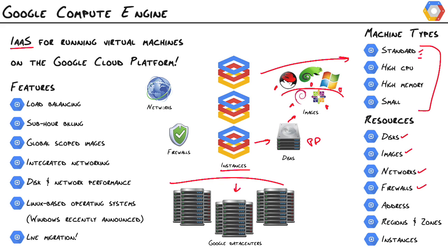We also have networks and firewalls that we can create to control traffic to and from our instances. Each virtual machine can have up to two addresses: one internal required address for communicating within the network, and an optional external IP address. We also have regions and zones, and this is where we can determine where our virtual machines and our data live. A lot of these resources are scoped at either the zone level or the global level, available to everything. Disks are scoped at the zone level, which is what makes them independent — so they're not tied to an instance — and your data is replicated across the data centers in that zone, so it's redundant and reliable.